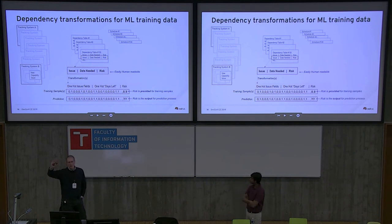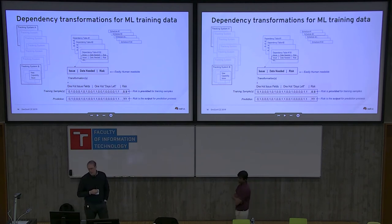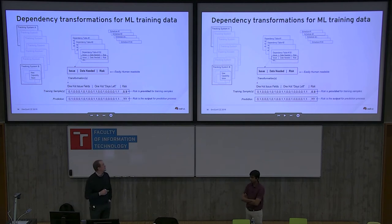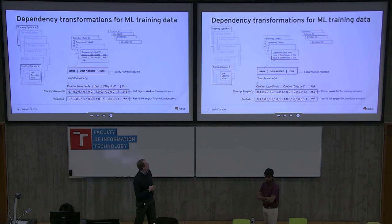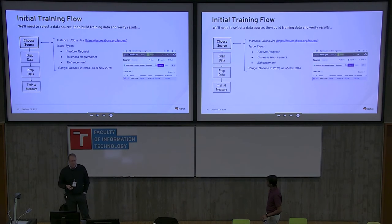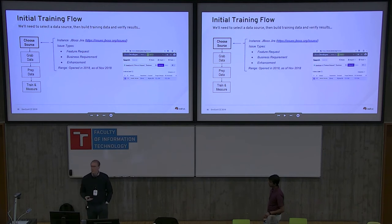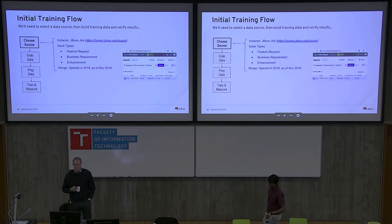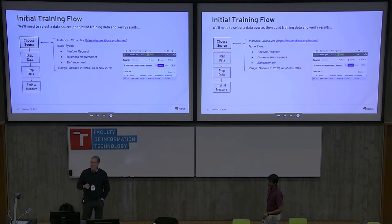If you remember the picture with the fairly complex problem domain, let's zoom in on one of the dependencies in one of the tables associated with one of the schedules. That had a pointer to the issue, a target date for when we need this thing to be ready, and what we want is the risk. We need to create training samples and provide a value for risk to check the training. The first data source we choose is the JBoss Jira instance. This has been in production at Red Hat for over 10 years for both community and product, and has hundreds of thousands of issues. We're talking about new capabilities — not bugs, not tasks — things like a new API or a new protocol that your product may want to leverage. In Jira the rough mapping of new capabilities to issue types would be feature requests, business requirements, and enhancements.